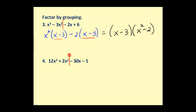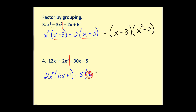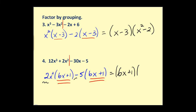Let's try number four, cutting it in half. The GCF of the first two terms is two x squared, leaving us with six x plus one. For the second two terms, the GCF of 30x and five would be five, but since we want the binomial factor to have positive terms, we factor out a negative five instead, leaving us with six x plus one. We check: negative five times six x plus one gives negative 30x minus five — it checks. We have the common binomial factor, so in factored form we have six x plus one times the quantity two x squared minus five.